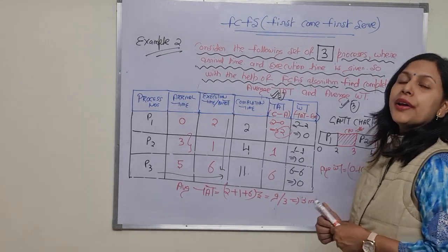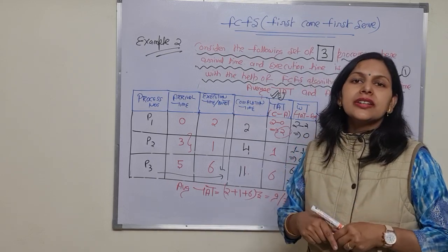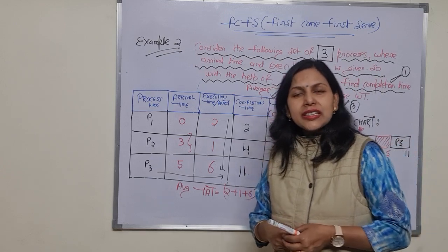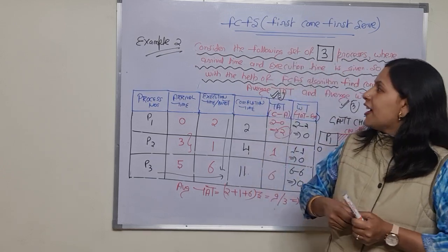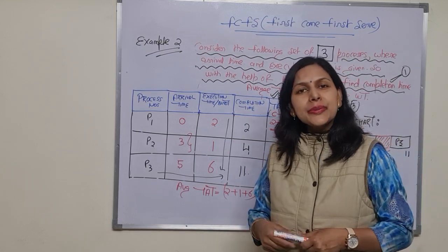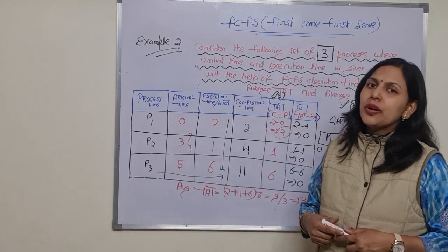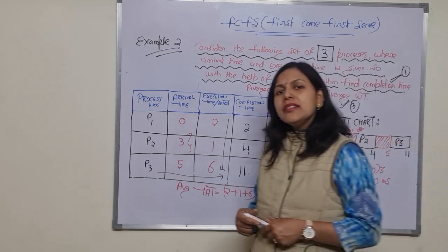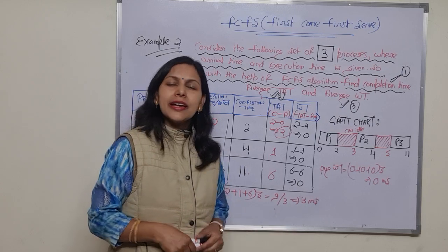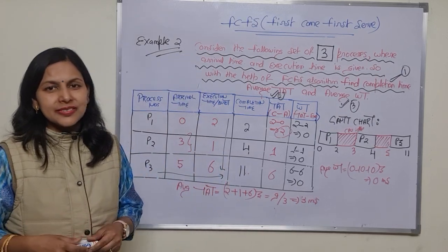This is how you can find the average turnaround time as well as the average waiting time for processes using the FCFS algorithm. Hope you understood it well. Please do practice. Thank you so much.